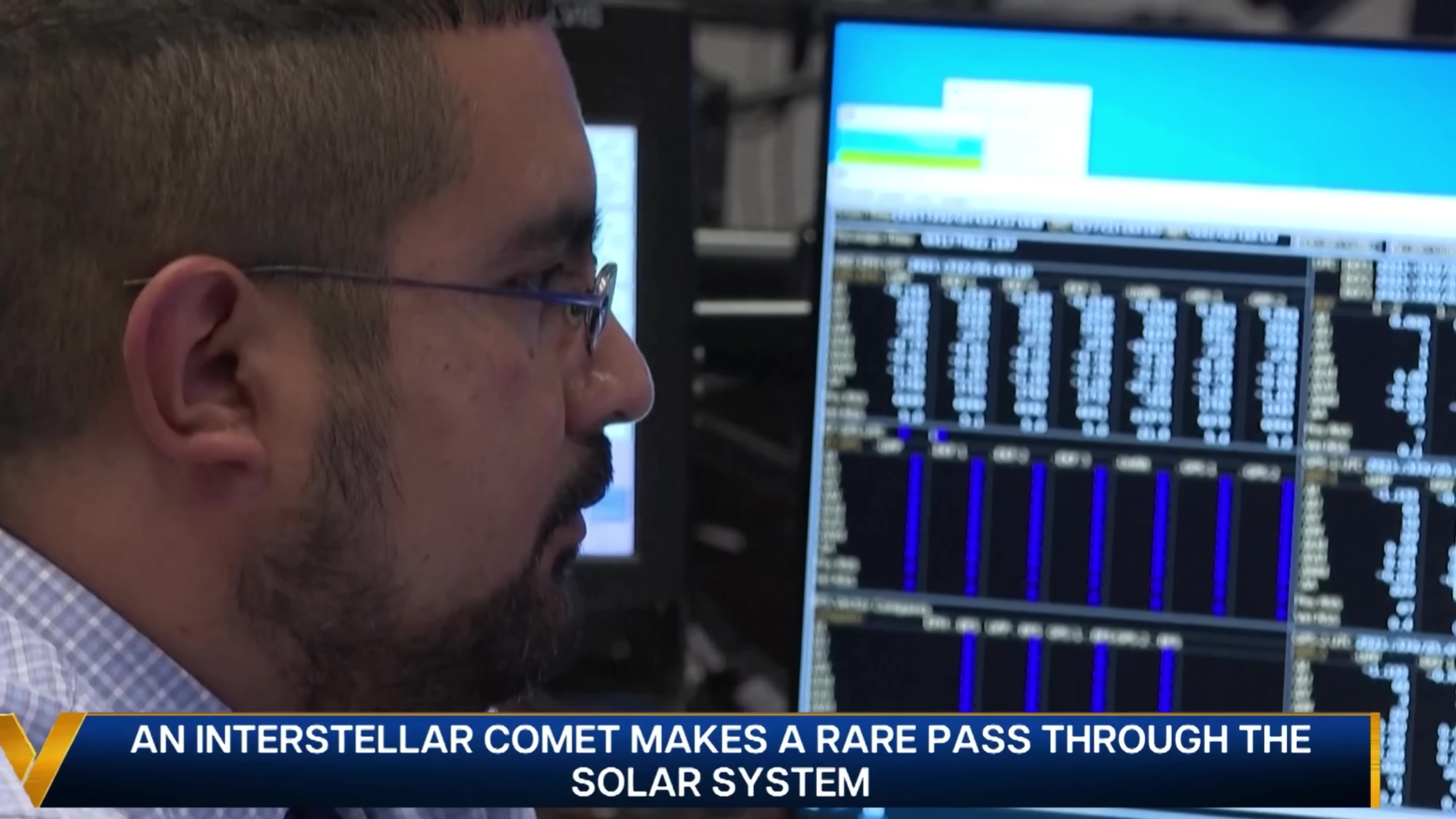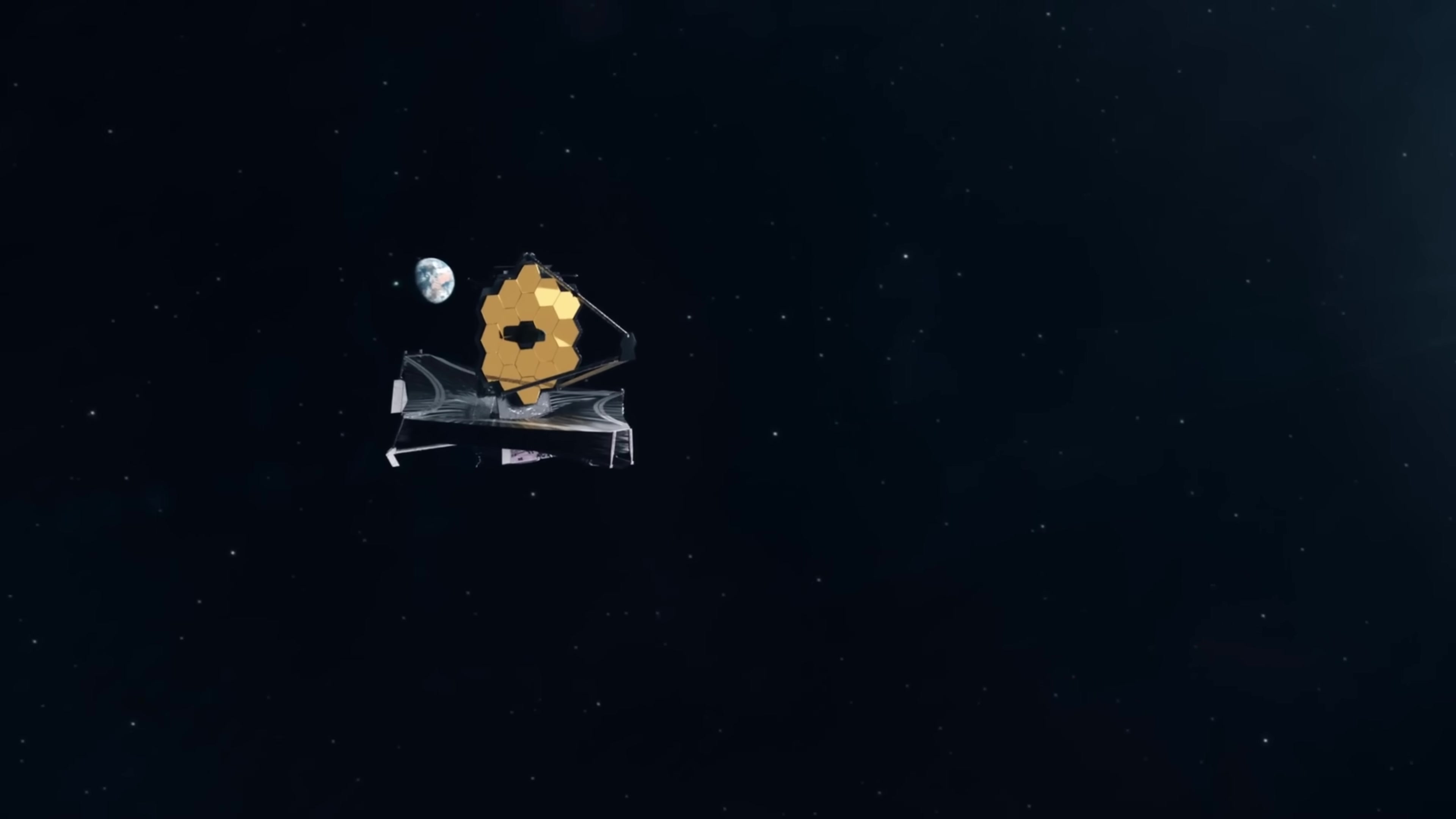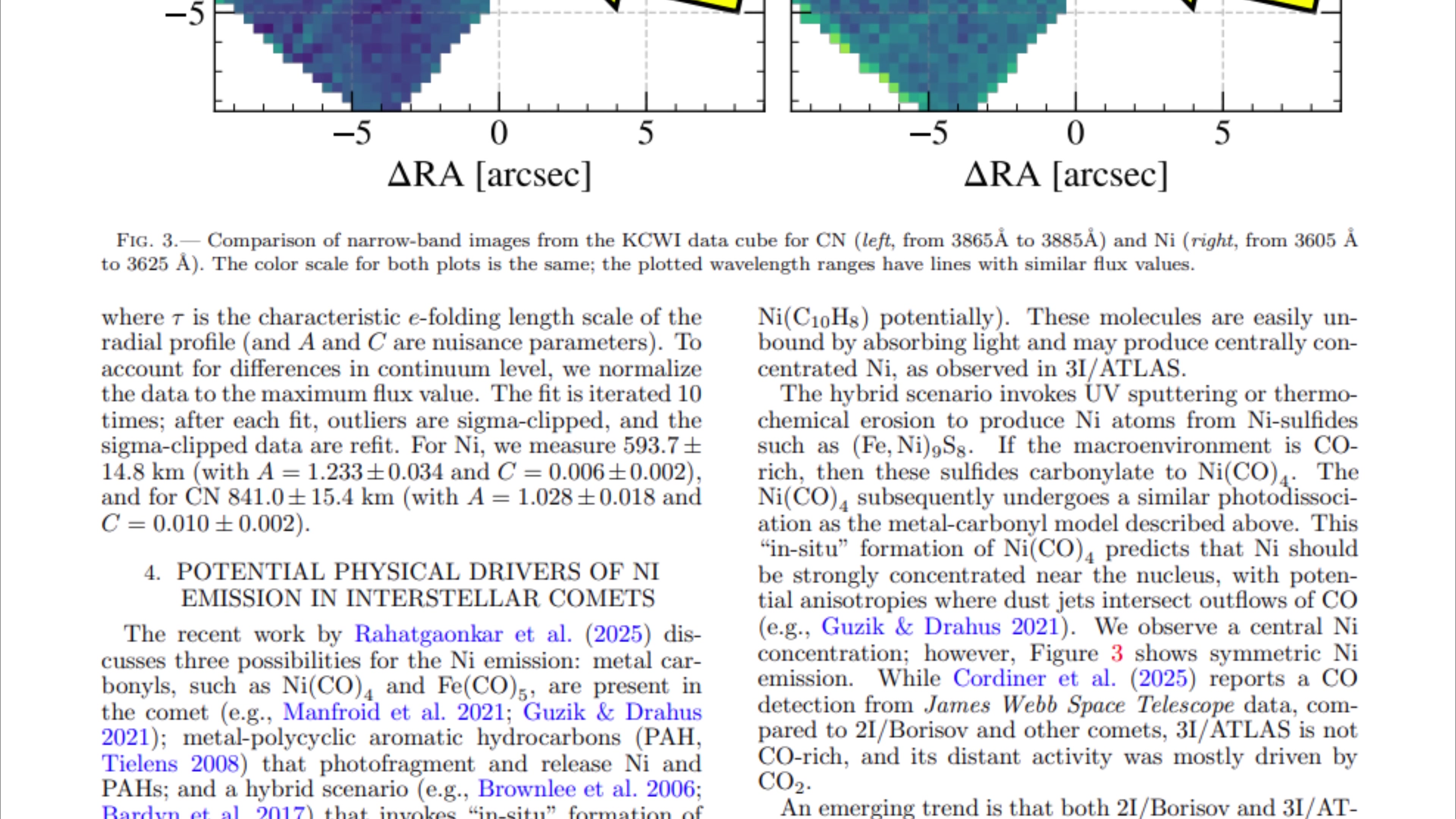The radio silence from Green Bank aligns perfectly with the multi-messenger data collected by other observatories, creating a unified picture of a natural object. While the radio astronomers listened for transmissions, optical and infrared telescopes, including the James Webb Telescope, analyzed the chemical and physical composition of 3I/ATLAS. These observations detected the presence of cyanogen, diatomic carbon, and water ice, the standard chemical building blocks of comets found within our own solar system.